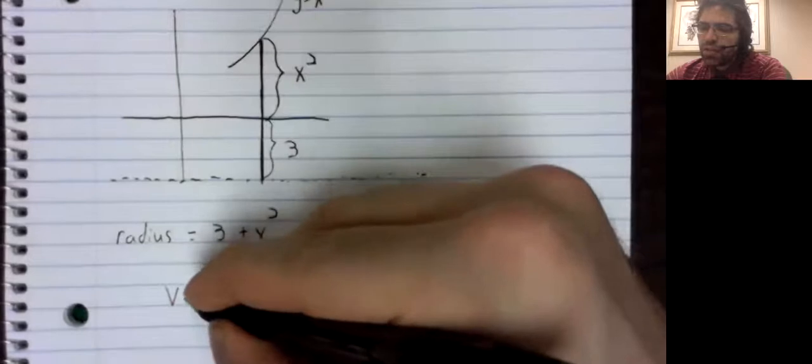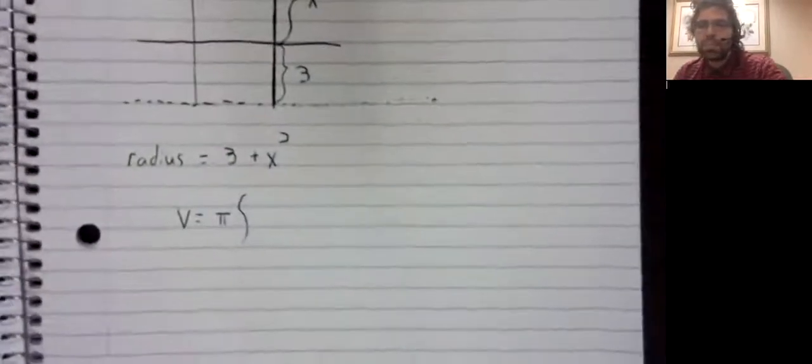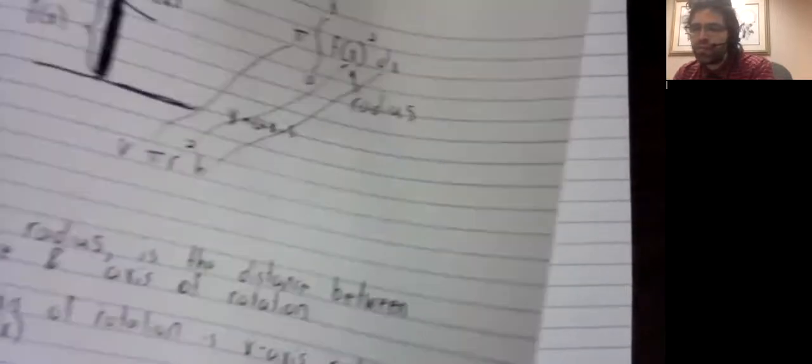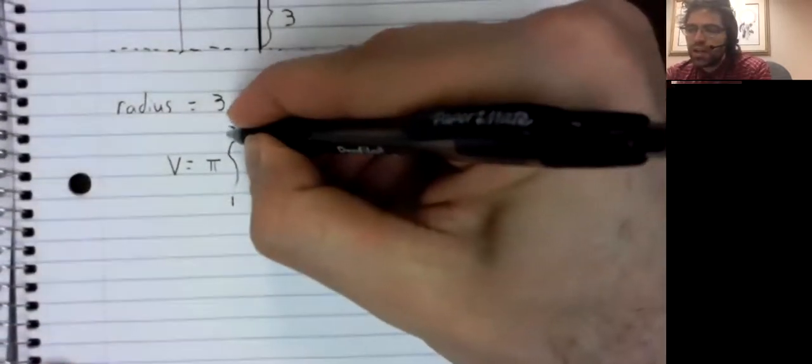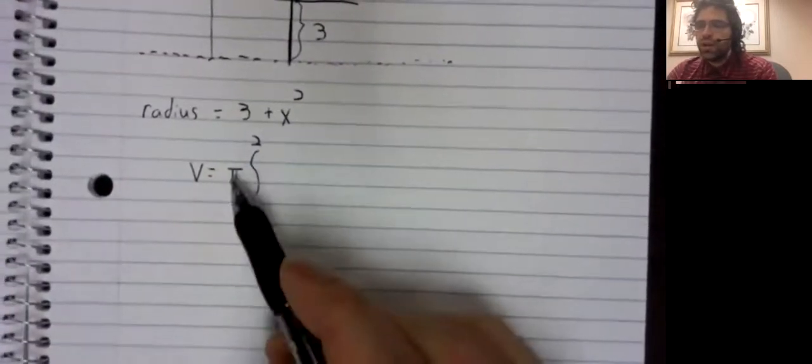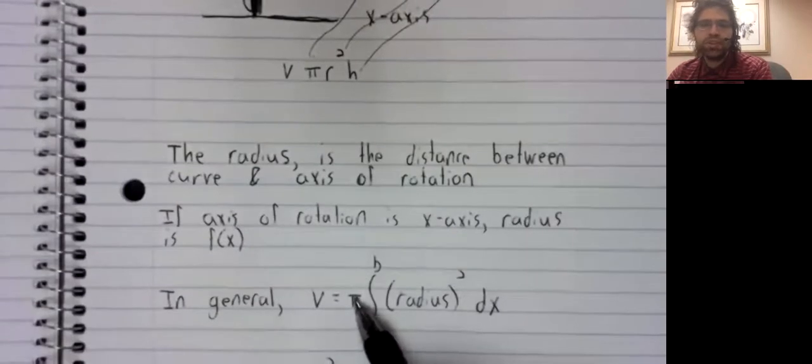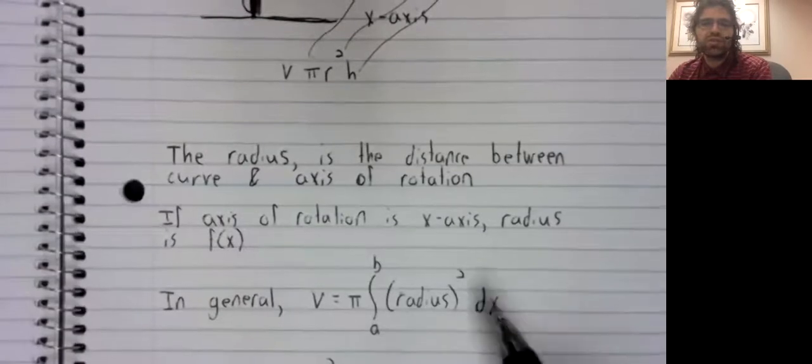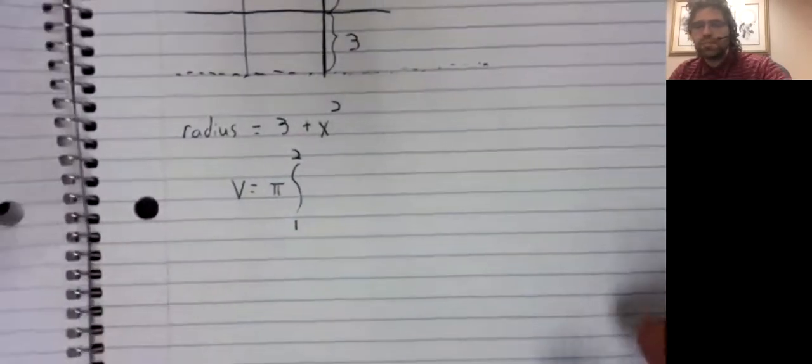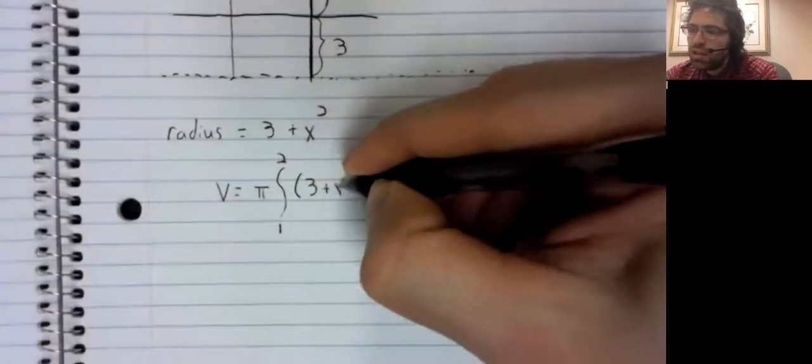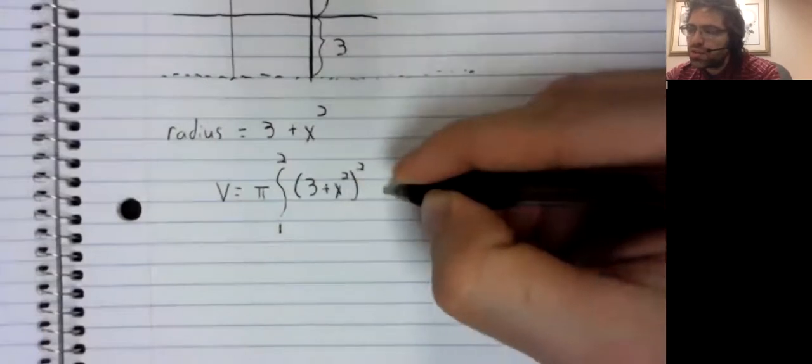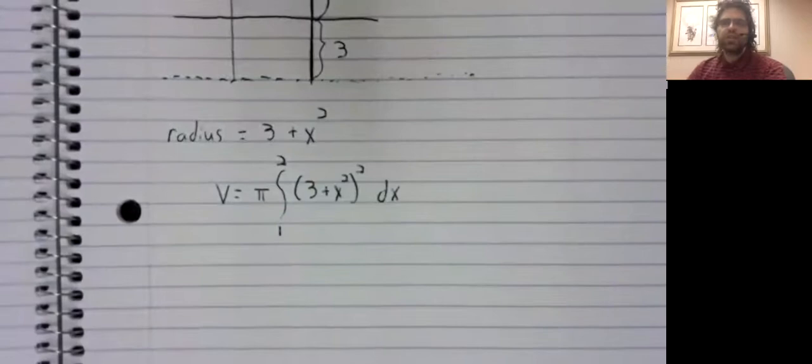And now finding the volume, it might be easy or it might be hard, but at least setting up the integral was simple enough. Let's see, we are going from one to two. That provides our limits of integration. We want a pi out front, and then we want the radius squared. And the radius is three plus x squared. And this is our integral.